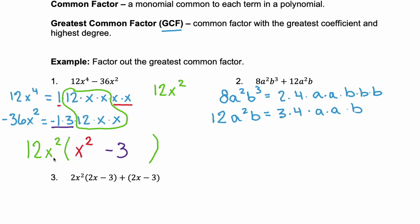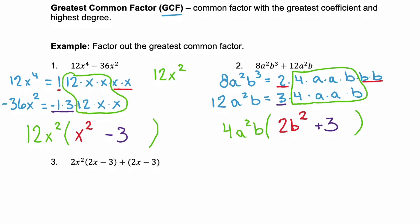So what do these two terms have in common? Well, they have the 4, the a squared, and the b. So my GCF is 4a squared b. And then we go back to each term and see what got left behind. The first term, we had 2 and b times b, or 2b squared. And in the second, we just had this positive 3. So there, we factored that second binomial.